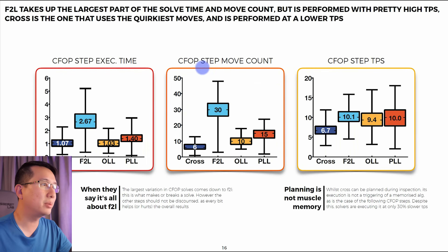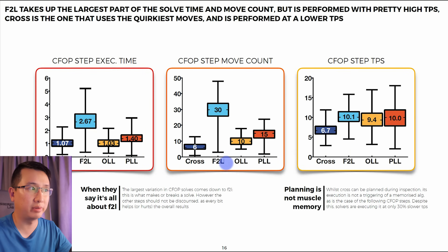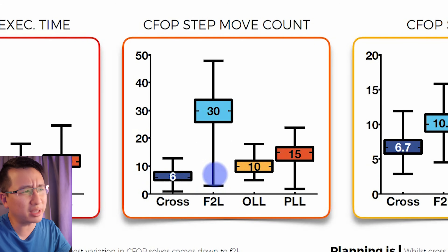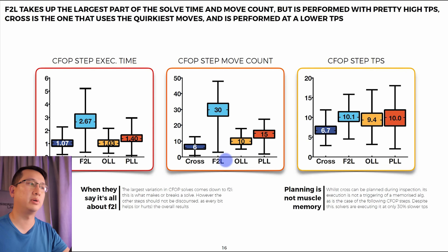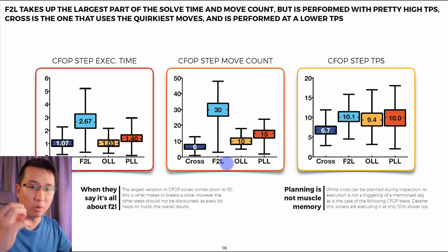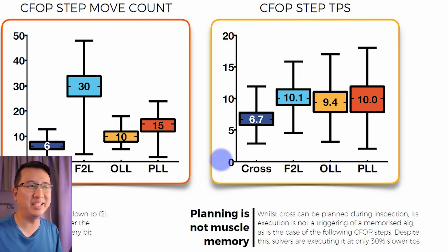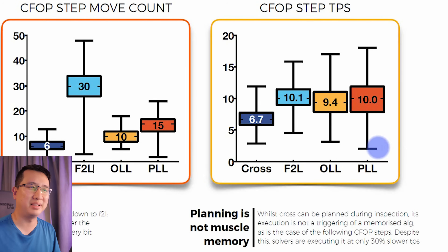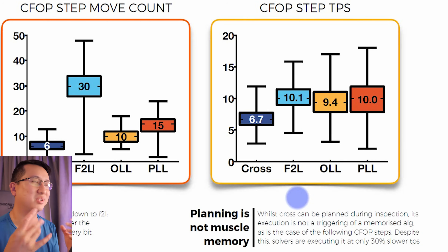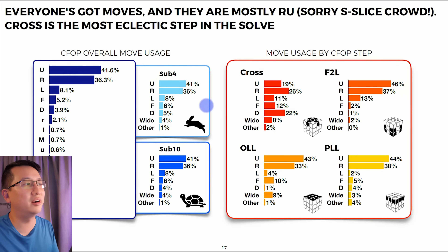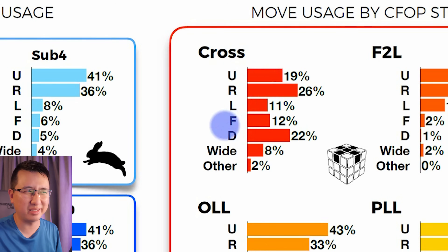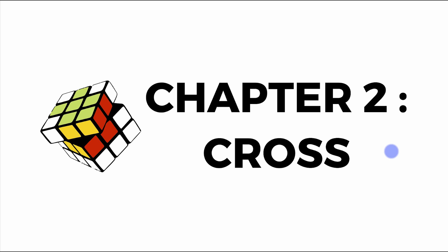Looking at box plots, F2L takes up the greatest move count — about 30 moves compared to 6, 10, and 15 for the other stages. But look at the variability — so much variation in F2L. That's why so many fast solvers say it's all about the F2L. Also interesting: turning speed during the cross is a lot slower than all other stages, which makes sense since the cross can be planned during inspection. And R and U moves are the most common ones across a solve, so it's fine to rely heavily on those.